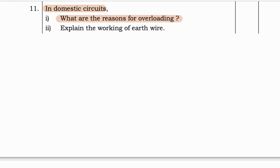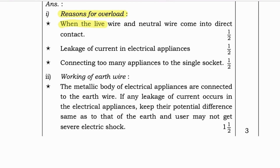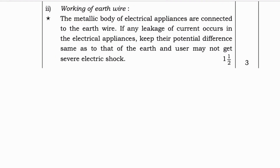Next question on domestic circuits: One, what are the reasons for overloading? Two, explain the working of earth wire. The reasons for overloading are: when the live wire and neutral wire come into direct contact, leakage of current in electric appliances, and connecting too many appliances to a single socket. The earth wire works by connecting the metallic body of electric appliances to earth, so if any leakage of current occurs, it keeps their potential the same as earth and the user may not get a severe electric shock.